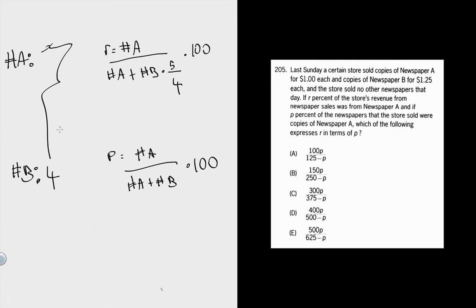A could be absolutely anything. But why not make it 4 as well? Because if you do that, then P—the percent of newspapers that are A—is 50. That math is just done for you. You don't have to do anything because we made these equal.